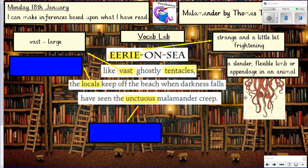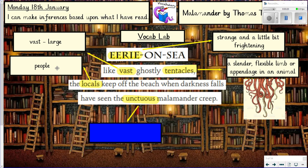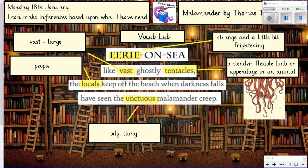Then we've got 'the locals keep off the beach when darkness falls.' Hopefully you understand that 'the locals' means the people in the local area. This next one is a little bit more challenging — the phrase is 'have seen the unctuous Malamander creep.' What might 'unctuous' mean? It's obviously some sort of adjective, and I'll be perfectly honest — I'd never come across that word either and looked it up in the dictionary. It means oily and slimy. So I've got this oily, slimy Malamander. We don't know what the Malamander is, but it creeps — so straight away we've got some ideas about what the Malamander does or is.